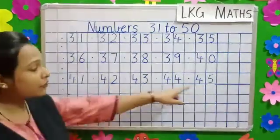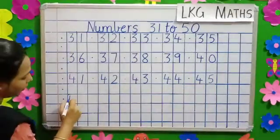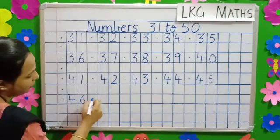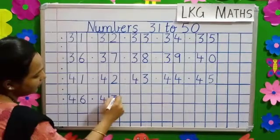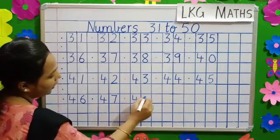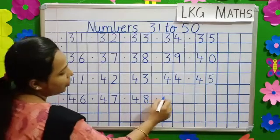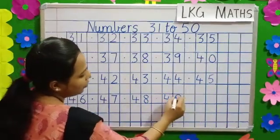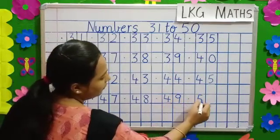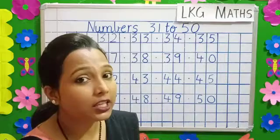What comes after 45 children? 46. So we write here 46. Dot 4, 7, 47. Dot 4, 8, 48. Dot 4, 9, 49. Dot 5, 0, 50.